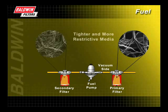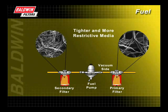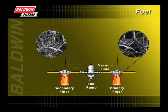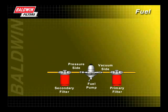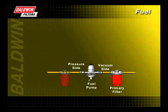Secondary filters have tighter media than primary filters and are designed to capture finer contaminants that often damage the injector tips and the injection pump. When a secondary filter is being used, it is located after or on the pressure side of the fuel pump. If only one filter is used, it is normally found on the vacuum side of the injection pump.